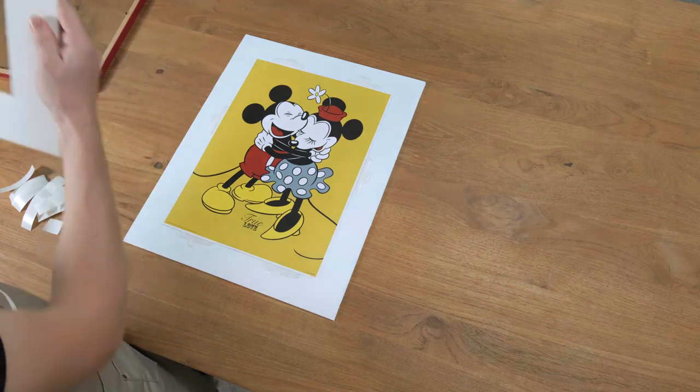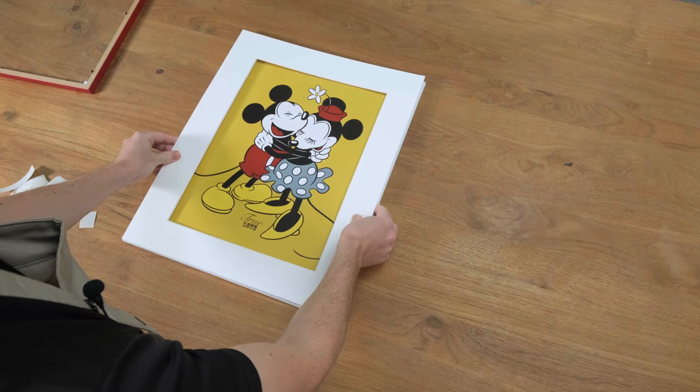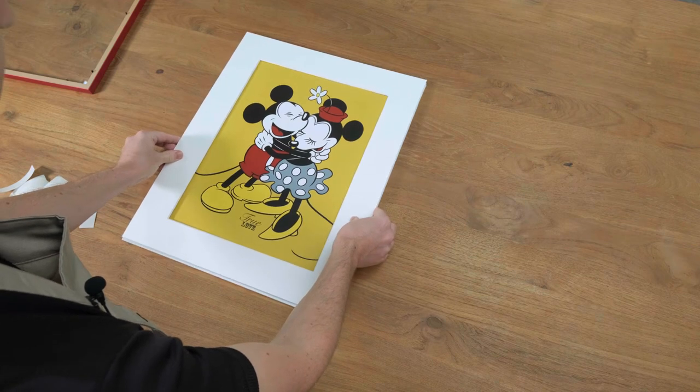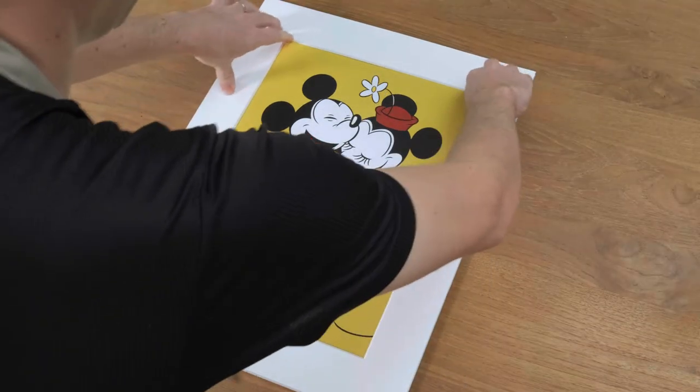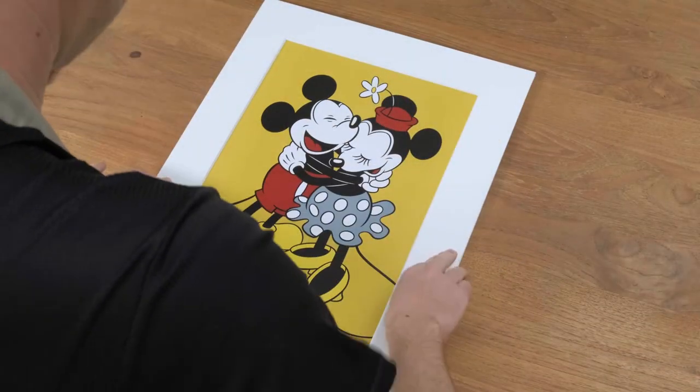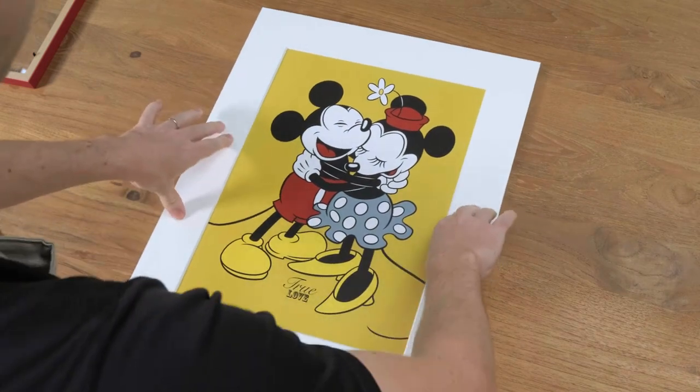We can take our mat border just to check that we're happy with the positioning. Now we can basically stick it down onto the item and apply some pressure.